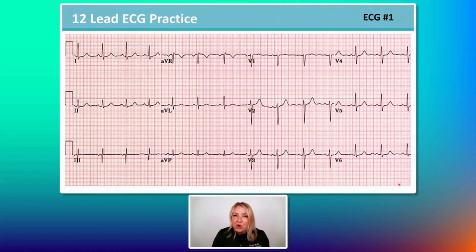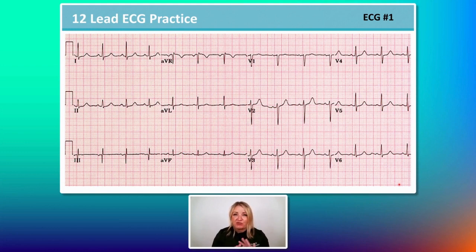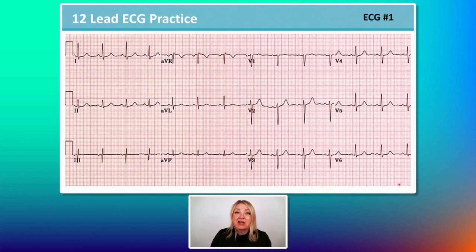You have to know what normal looks like to pick up abnormal. This is an ECG that is normal — this is going to be your reference ECG, or ECG number one. You've got to know what normal looks like. This is a normal 12-lead ECG.